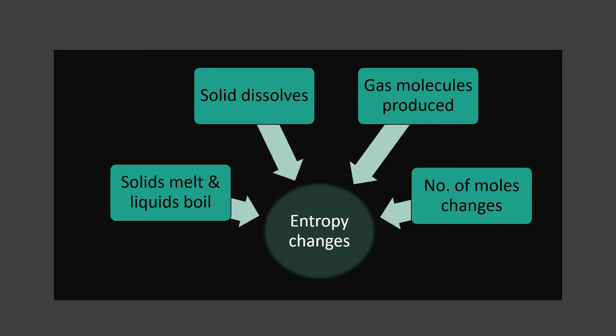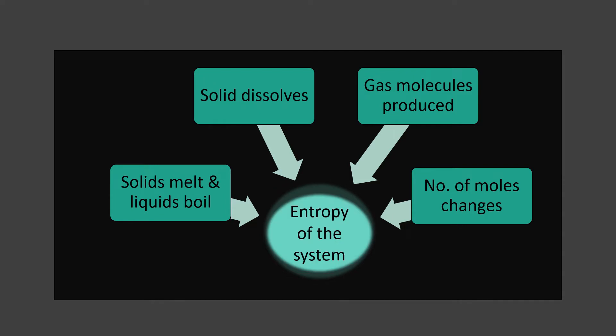So there you have the several ways in which entropy can be affected: whether you have a change in physical states — solids melting or liquids boiling — or solids dissolving to form aqueous ions, or gas molecules being produced, or the number of moles changing from reactants to products. It is very important to note that in all these examples we are only talking about the entropy of the system — that is, the species involved in the reaction. When answering questions on entropy of the system, observe the reaction or equation carefully to see if there is a change in physical state, a change in the number of moles, or if a gas has been produced. This will be your justification.